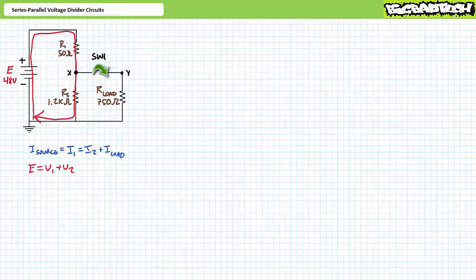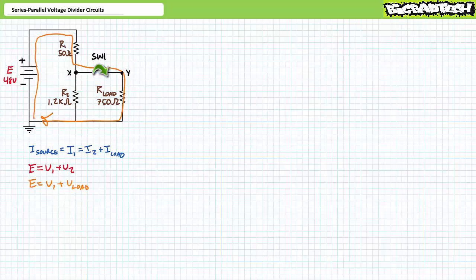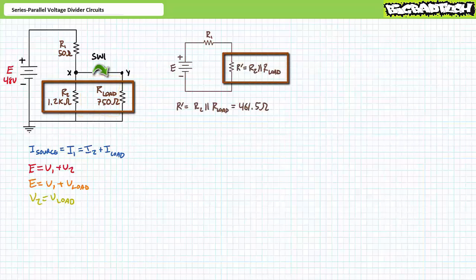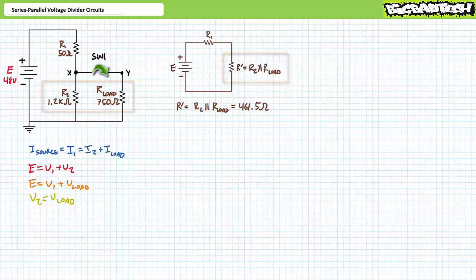A Kirchhoff's voltage law analysis of the loop in red suggests that E equals V1 plus V2. A KVL analysis of the loop in orange suggests that E equals V1 plus voltage across the load. A KVL analysis of the loop in yellow suggests that V2 equals the voltage across the load. These analyses imply that R2 is perfectly in parallel with the load resistor. The parallel combination of R2 and R load is 461.5 ohms — let's call this simplification R prime — which is perfectly in series with R1.